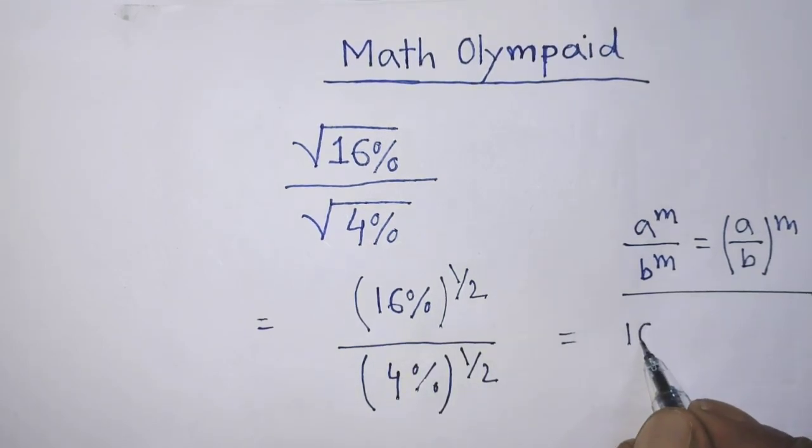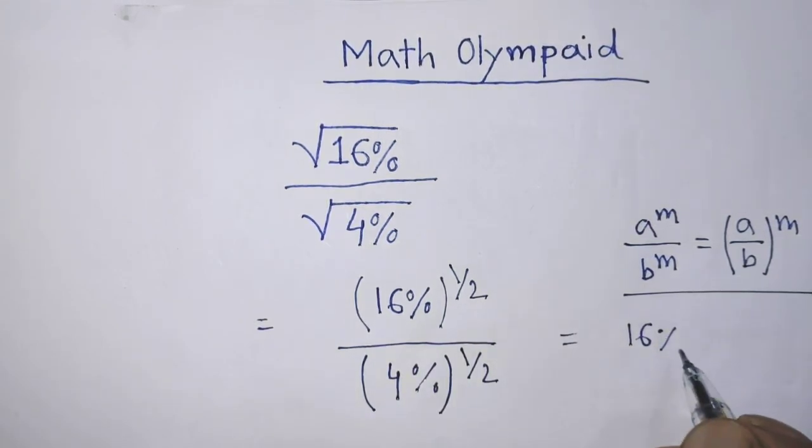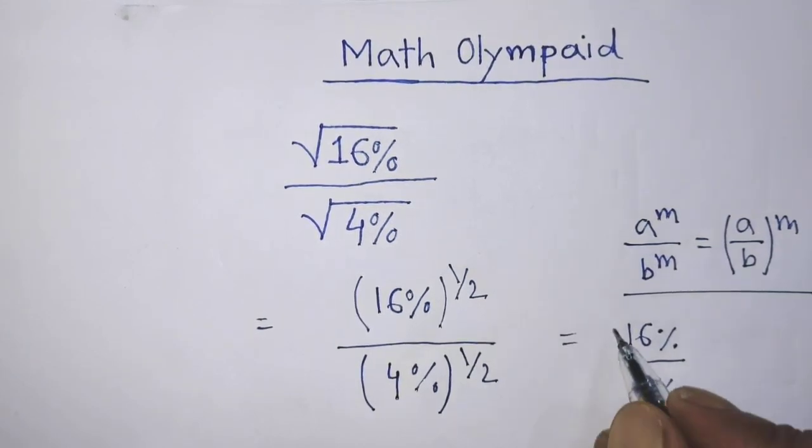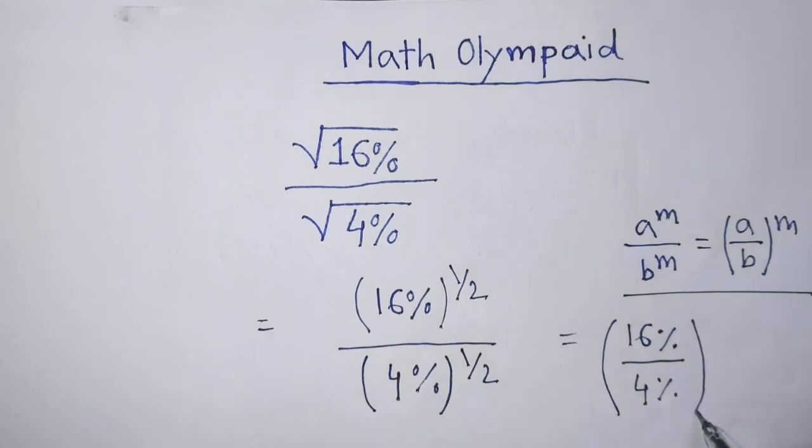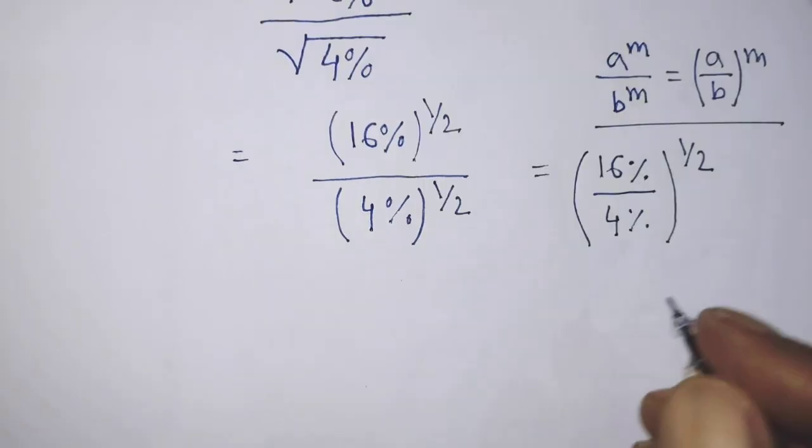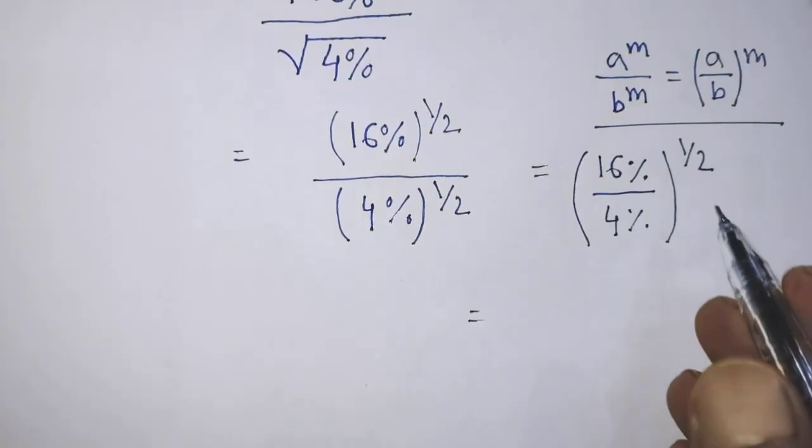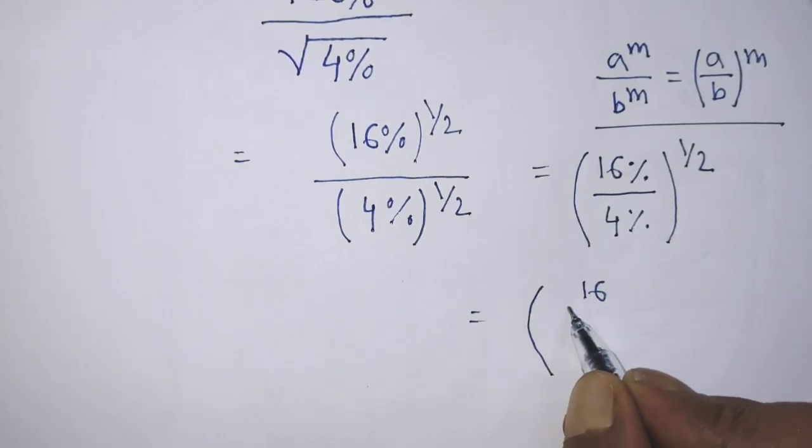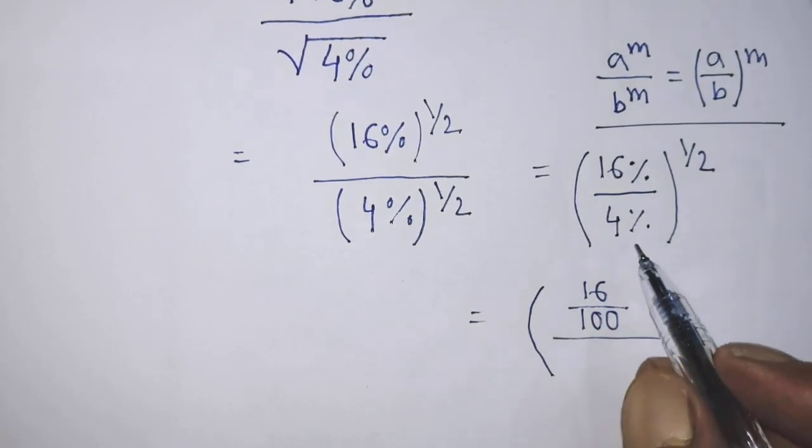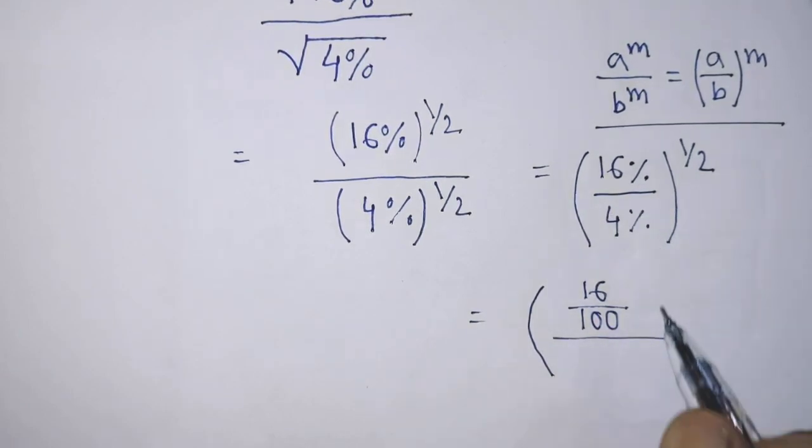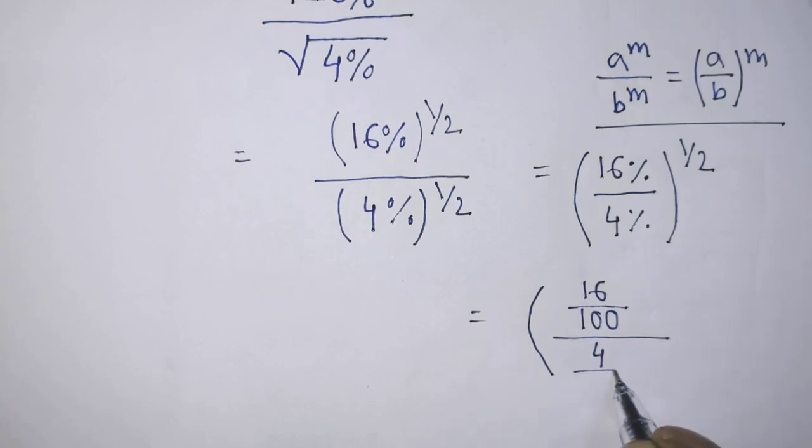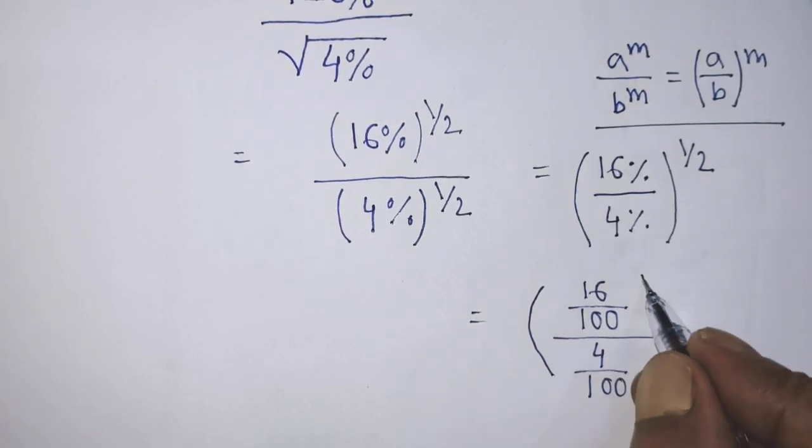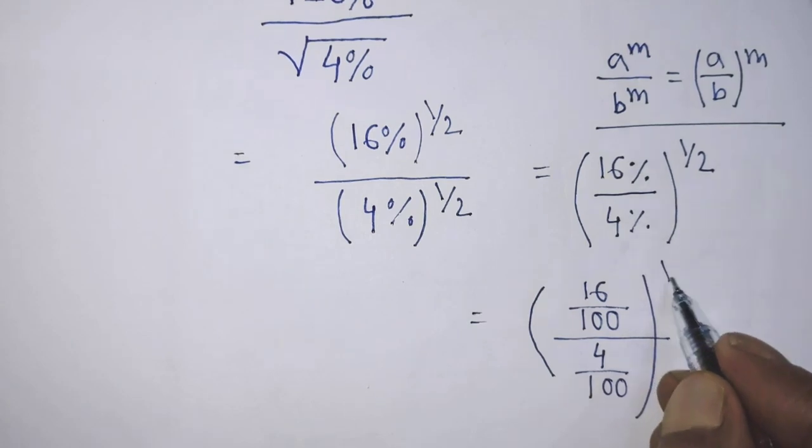According to this formula, it will be 16 percent over 4 percent whole to the power one over two. After that, it will be 16 over 100 over 4 over 100, whole to the power 1 over 2.